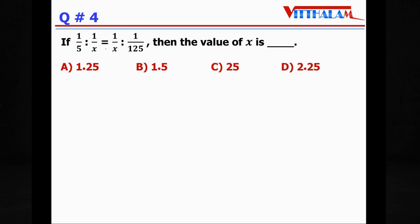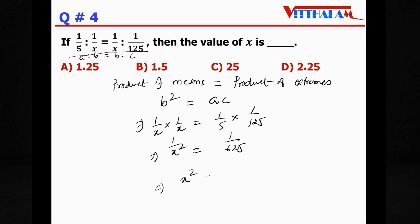Question 4: If 1/5 : 1/x = 1/x : 1/125, so this is a proportion with four numbers. One important property of proportion is: product of means equals product of extremes. Or we will say square of middle term equals product of extremes. If it is A:B::B:C, here it is same, so B² = A×C. Therefore (1/x) × (1/x) = 1/5 × 1/125. Therefore 1/x² = 1/625, therefore x² = 625, which is nothing but 25², therefore x = 25.